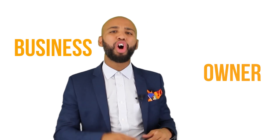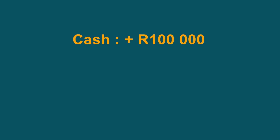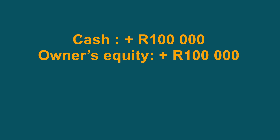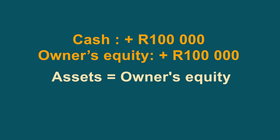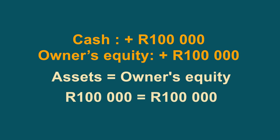To sum it up, the asset cash increased by 100,000 rand, and the owner's contribution gives the owner interest in the business called owner's equity. The owner's equity will also increase by 100,000 rand. You should always test if a transaction is filled in correctly. We are looking at two components: assets equals owner's equity. Therefore, the 100,000 rand representing assets equals the 100,000 rand representing owner's equity — thus, the equation is correct. Brenda contributed 100,000 rand towards her business: this is an asset because cash increases, and it also increases owner's equity.